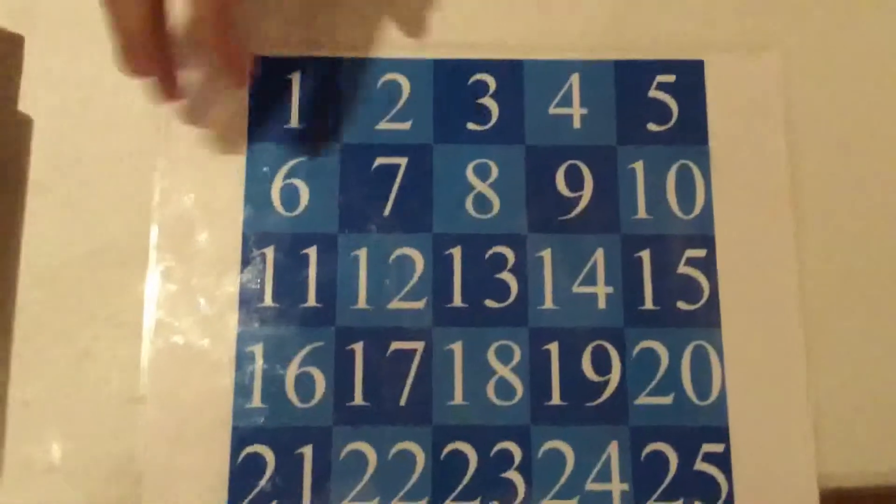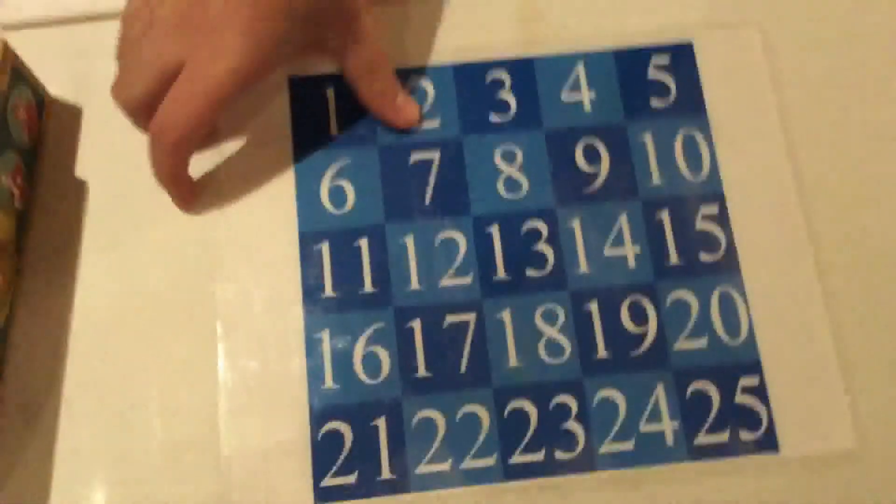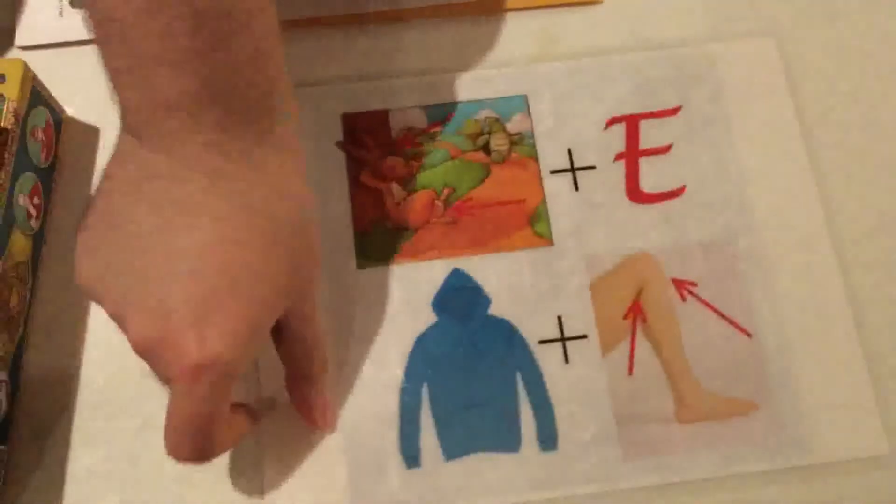You guys want to play Fury of Dracula and hit record. Oh, you already hit record. Okay. Behind these numbers is a puzzle. Can you solve it? Hair plus E. Harry. Hoodie plus E. Houdini. Harry Houdini. If you can do that, you can win a brand new board game as we play Proton Concentration. Let's do it.